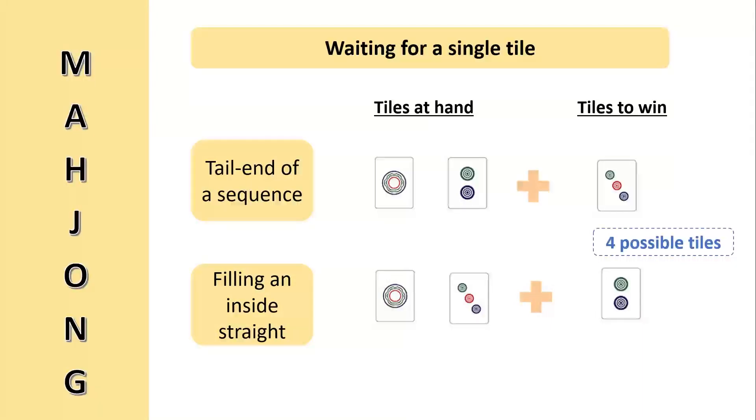The second example here is when we are waiting for a single number in between two numbers of three taus number sequence, like a yi tong and san tong. We can only wait for a ee tong in this case to win the game. Based on the same assumption that no ee tong is in the discard pile or has appeared during the game, this means that only four taus will win you the game.